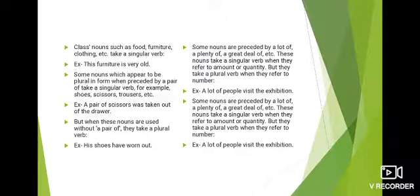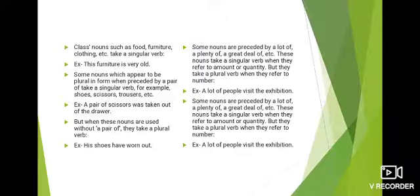Some nouns which are plural in form, when preceded by 'a pair of', take a singular verb — for example shoes, scissors, trousers, etc. Example: 'A pair of scissors was taken out of the drawer.' Scissors plural है, लेकिन इसके पहले 'a pair of' लगा है, इसलिए singular verb 'was' लगाई है। But when these nouns are used without 'a pair of', they take a plural verb. Example: 'His shoes have worn out' — यहाँ 'a pair of' नहीं है, इसलिए plural verb 'have' लगाई है।